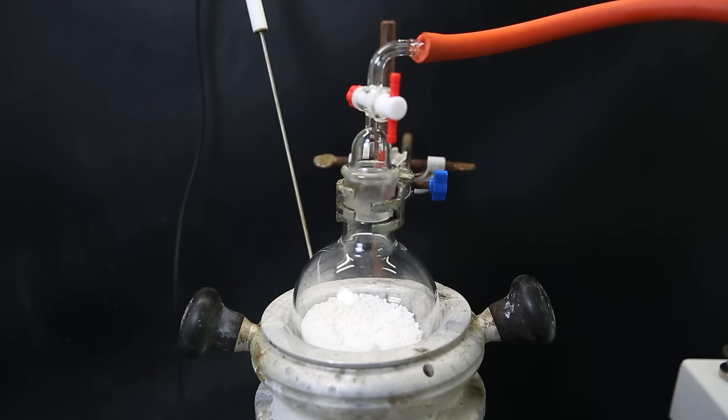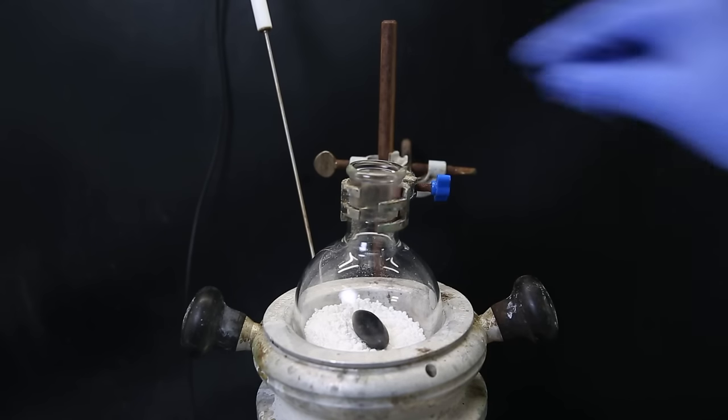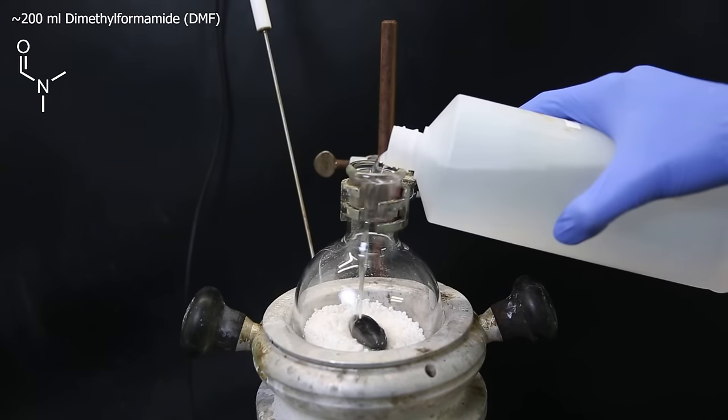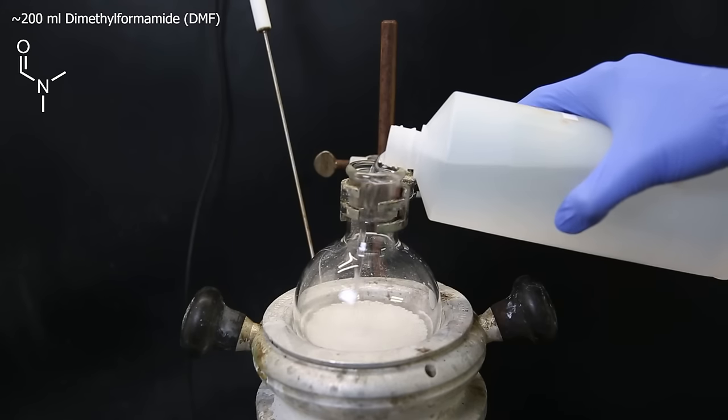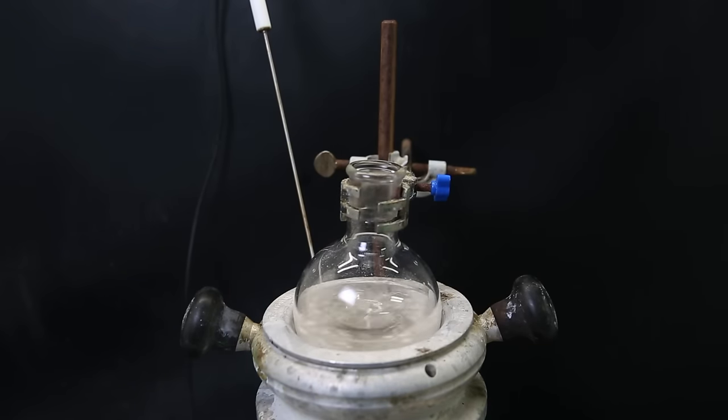I heat the flask and pull a strong vacuum to make sure all traces of DCM are gone, because having a bunch of DCM present can cause an explosion in the next reaction. When that is done, I can start the next reaction. So I add a stir bar, and then approximately 200ml of dimethyl formamide as a solvent. I also started heating it to 80°C, and waited until everything dissolved.